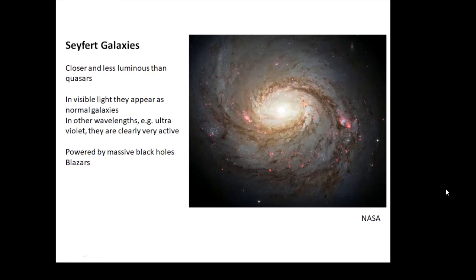Seyfert galaxies are quasars' little brother - they're not as far away and not as luminous. They still give off lots of radiation and are still active galaxies. In visible light they look like normal galaxies, but in other wavelengths we see their nuclei are very active. In the middle there is a massive black hole, which brings us to blazars.